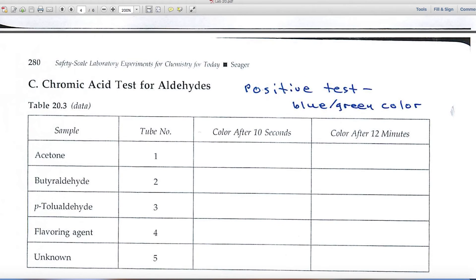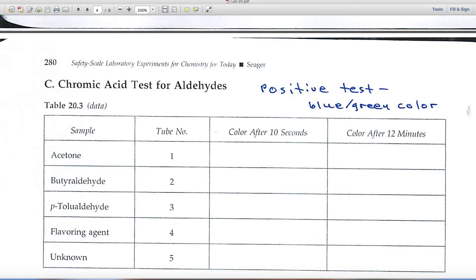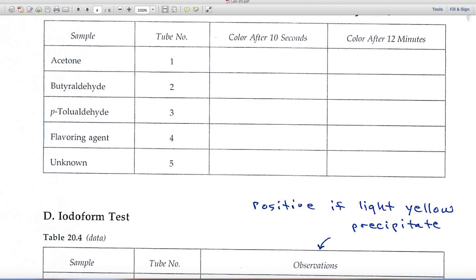In part C, the chromic acid test for aldehydes, chromic acid forms an orange colored solution. And when it reacts with an aldehyde, you get a blue green color. So again, you'll want to note colors and the formation of colors.